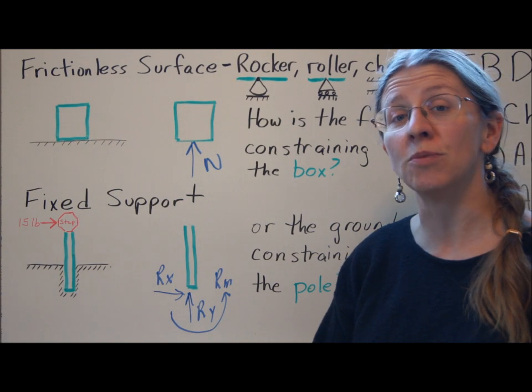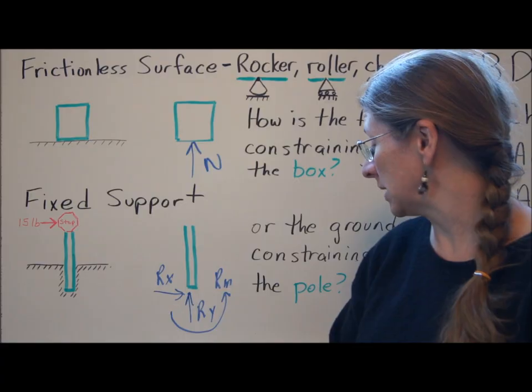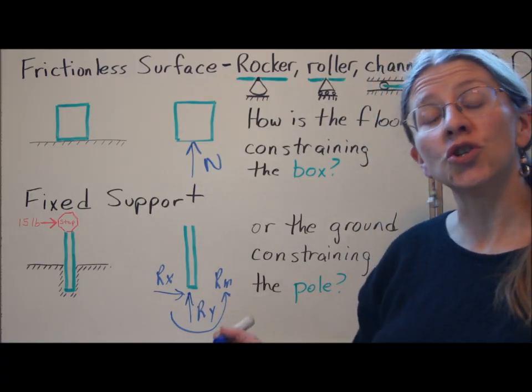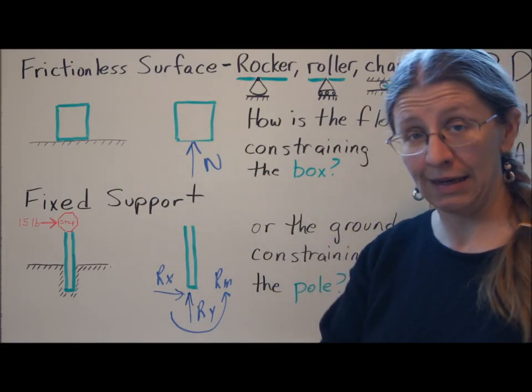Whatever it is, it's a reaction moment as well. A fixed support gives you two forces and a moment. That's the answer to how is the ground constraining the pole. It can't move right and left, it can't move up and down, and it can't rotate.